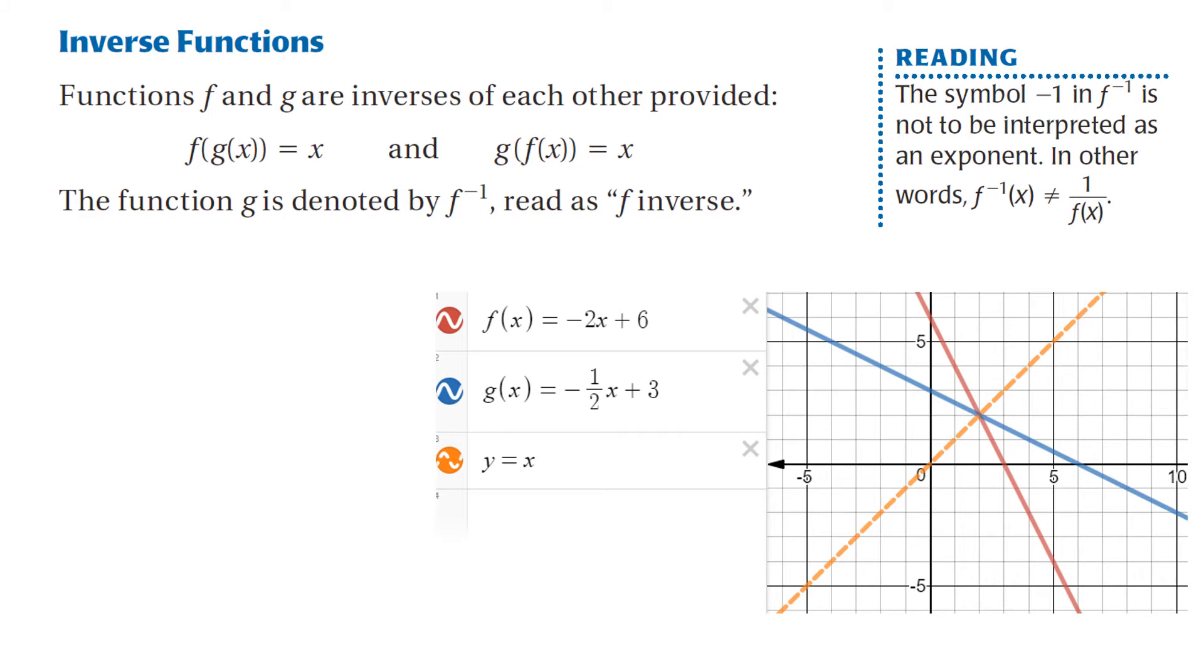How do you verify that two functions are inverses? They have to meet the following two criteria. f of g of x has to equal x, and g of f of x has to equal x. That is the only way to truly prove that they are inverses. And note that when you see f raised to negative 1 power, it just means the inverse of f or f inverse.